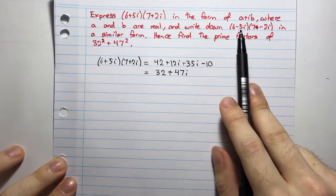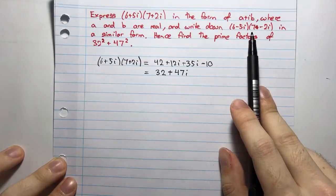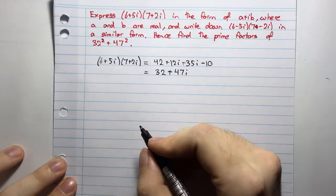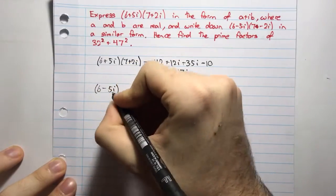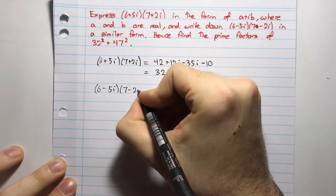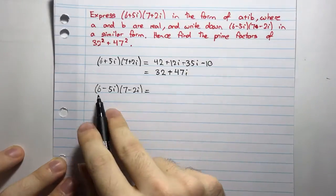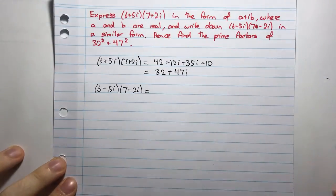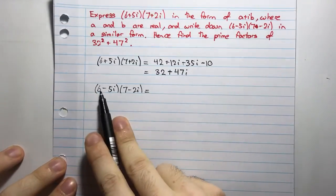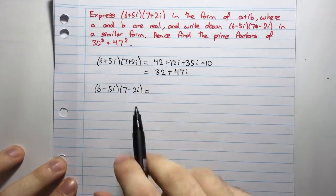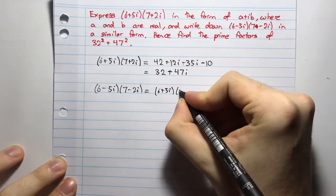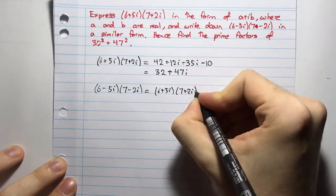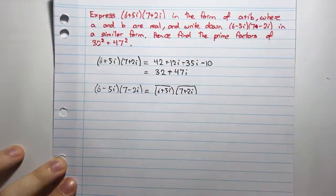And then it says, write down (6-5i)(7-2i) in a similar form. So, (6-5i)(7-2i). Now, I could just go ahead and expand that out, and that'd be fine, but I could also see that this is the conjugate of that, and this is the conjugate of that.